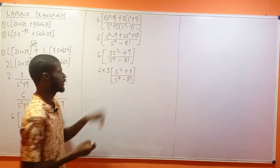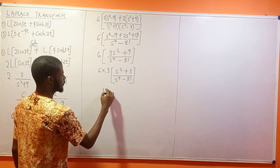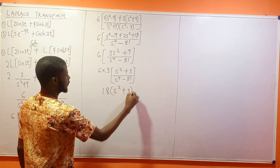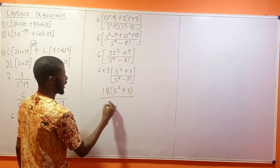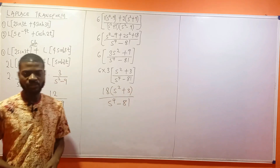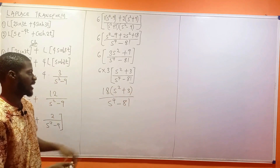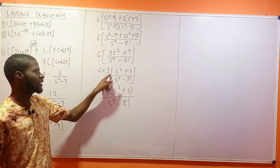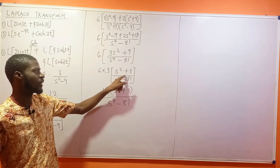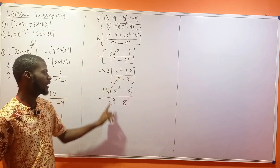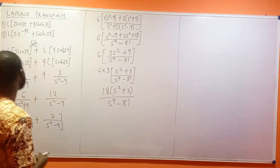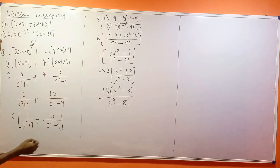So the final answer is 18(s² + 3) divided by s⁴ minus 81. It's better to express the answer as 18(s² + 3) over s⁴ minus 81. That's the result for Problem 1.